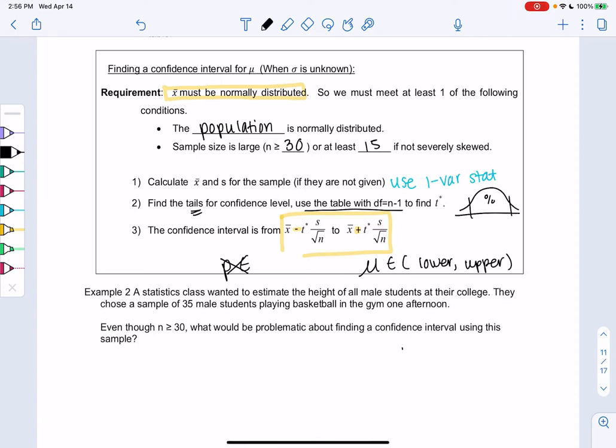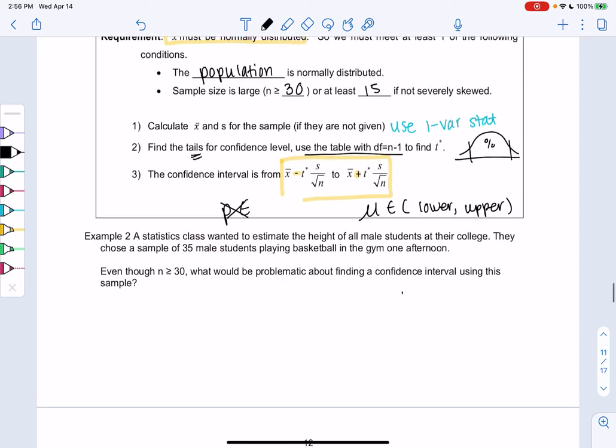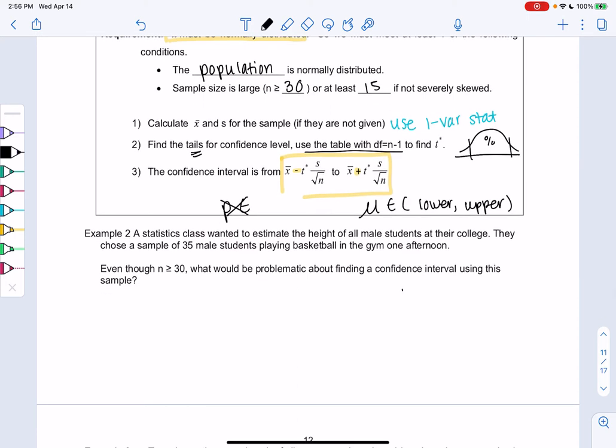So let's check out some examples. So example two, a statistics class wanted to estimate the height of all male students at their college. They chose a sample of 35 male students playing basketball in the gym one afternoon.